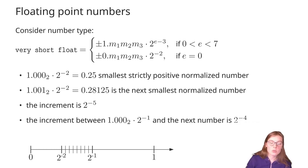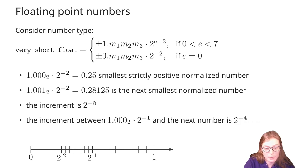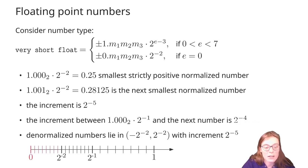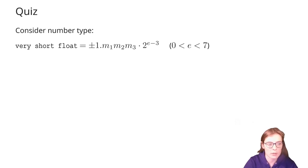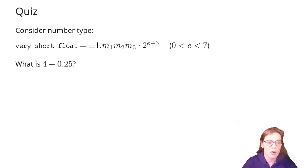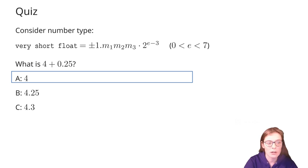That means that the smallest, strictly positive, normalized number is given by mantissa equal to 0 and exponent equal to 1. Putting this together, we get 1.0 times 2 to the power of 1 minus 3, which is 1/4, so 0.25. The next smallest normalized number will be given by M=1 and E=1, giving 1.001 times 2 to the minus 2, which equals 0.28125. We may continue this process and find that on the interval between 2^{-2} and 2^{-1}, the very short float can represent numbers with an increment of 2^{-5}. Surprisingly, the result of 4 + 0.25 using this very short float is just 4, because the second summand is too small to bring the total sum to the next representable value.